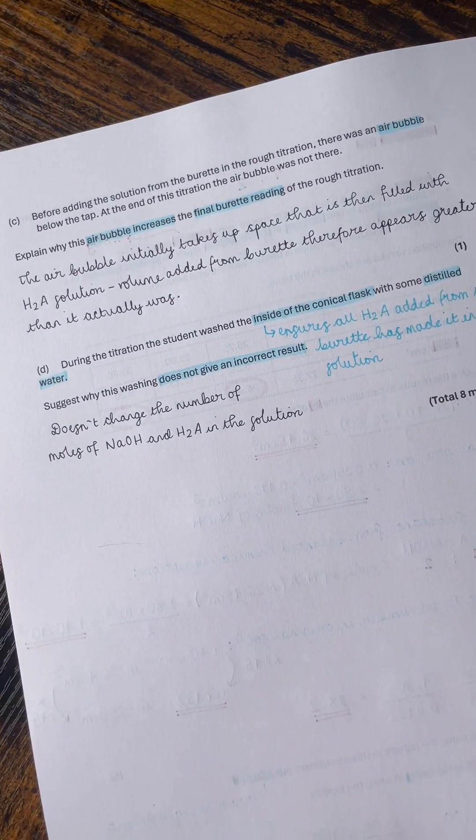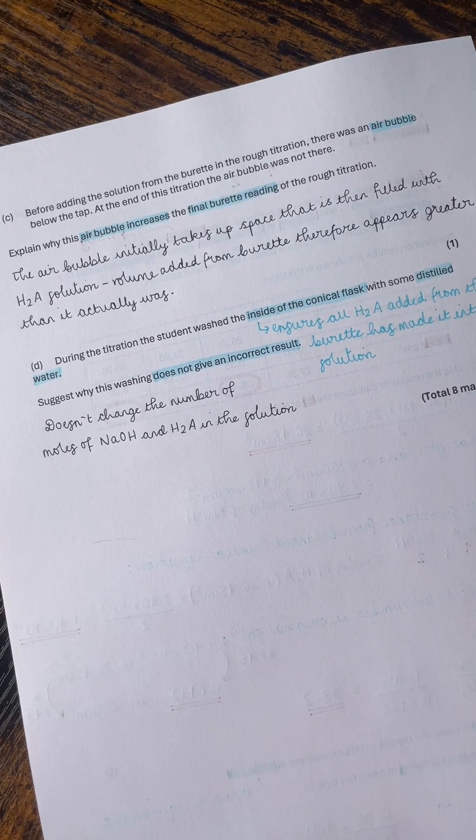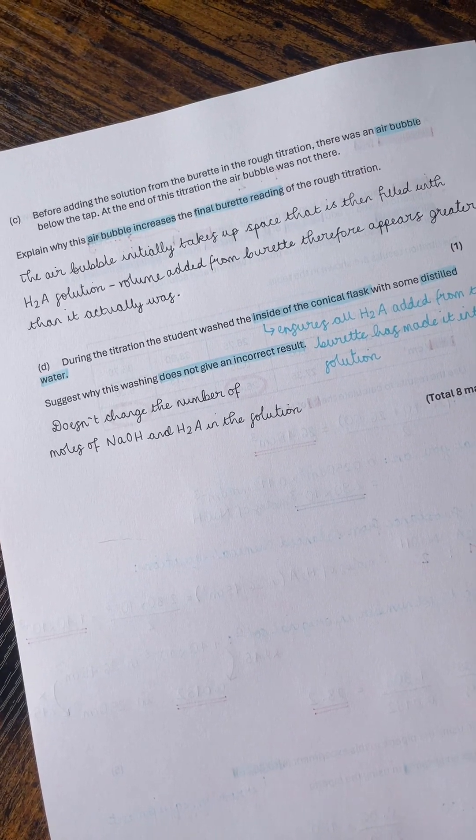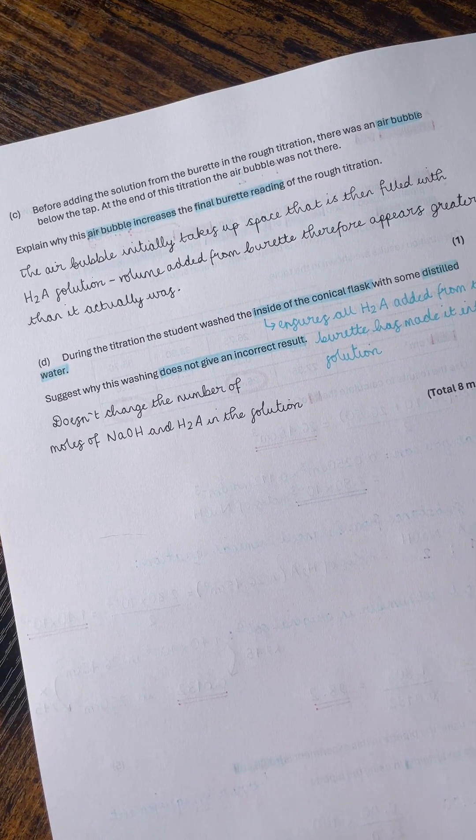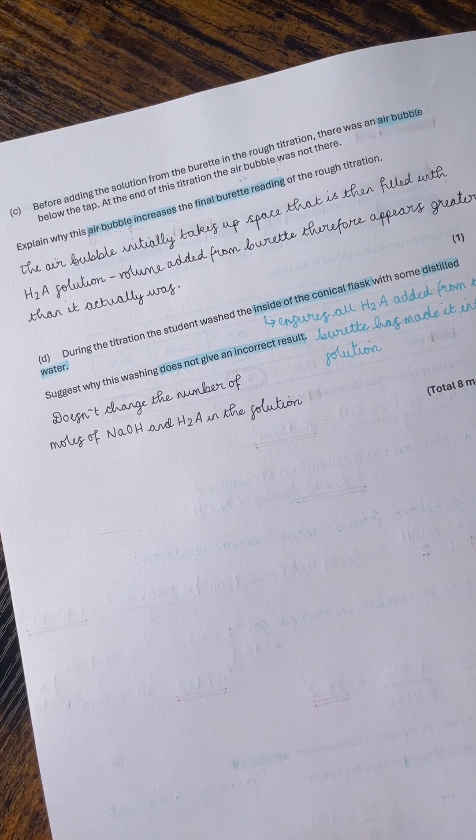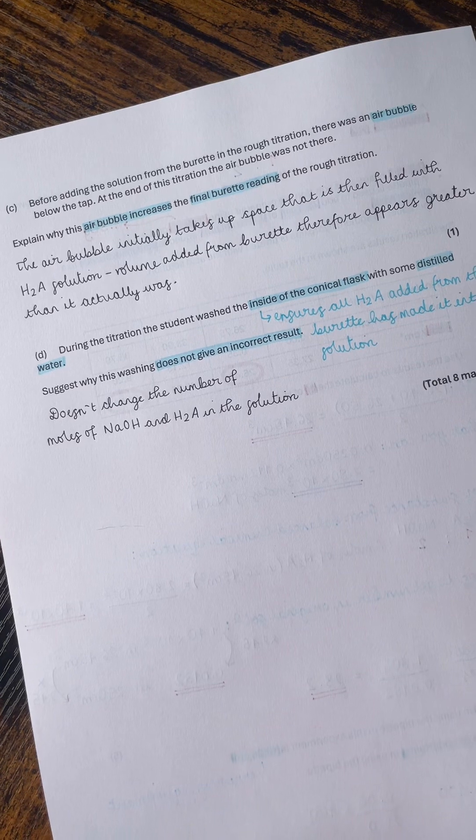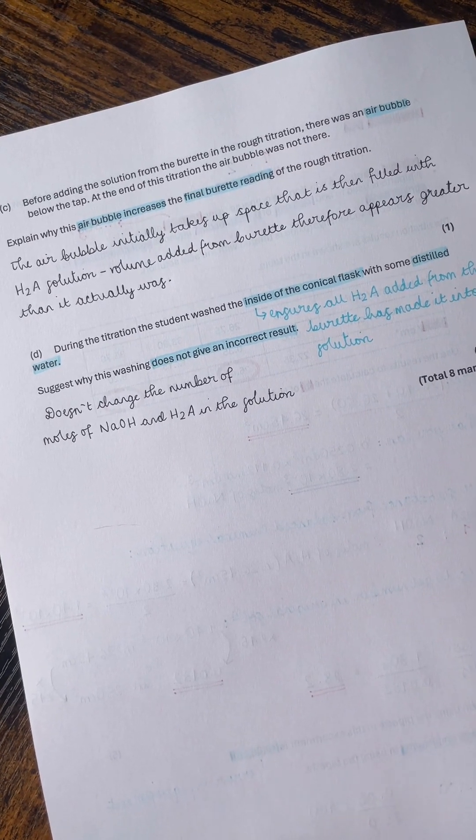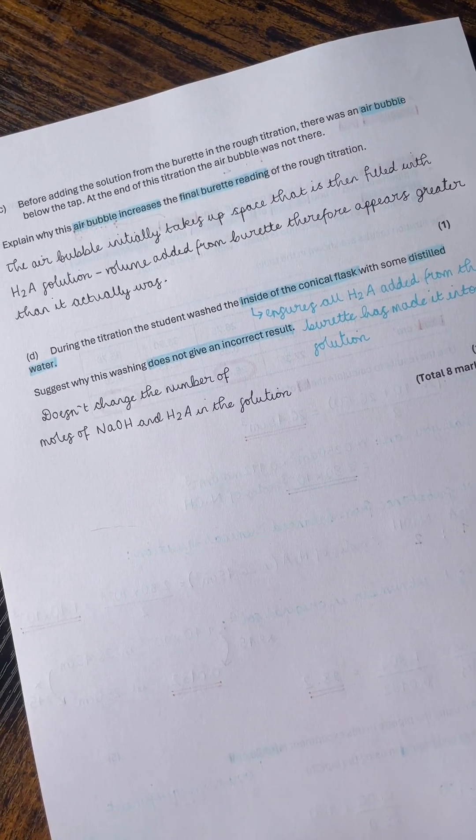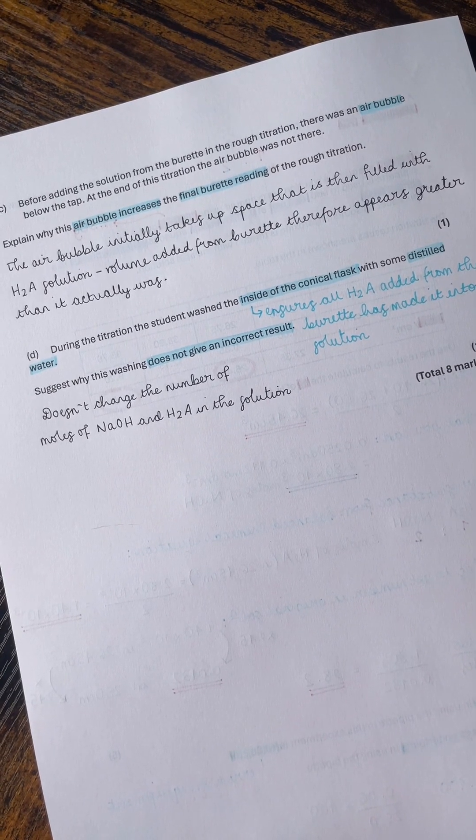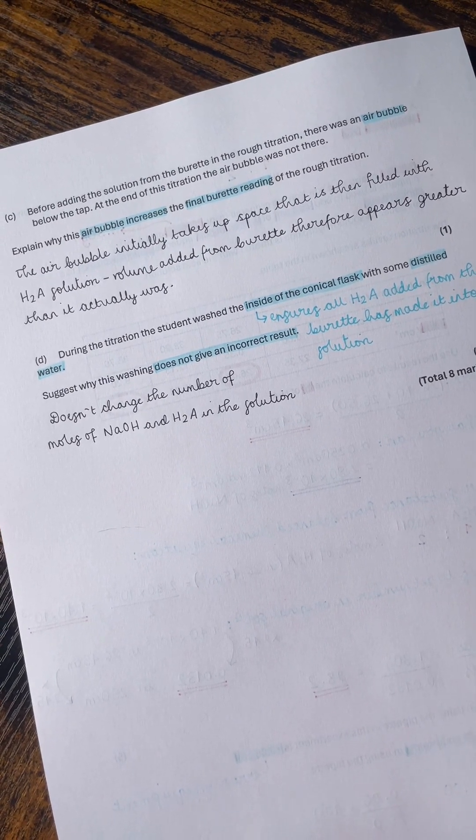In terms of the air bubble, if there was an air bubble initially that was then not there at the end, the air bubble will initially be taking up space. And then when you open the tap, that air bubble will be decreasing the volume in the burette, but obviously no solution will actually be coming out of the burette at that time. So that's going to make it look like more volume was added from the burette than there actually was, and that's going to therefore increase the final burette reading and thus increase the titer.